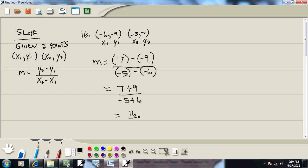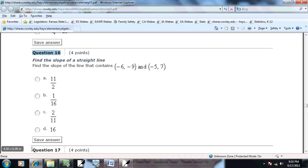7 plus 9 gives us 16. Negative 5 plus 6 gives us 1. Which gives us 16 over 1, gives us 16. That's interesting. Problem number 16 has the answer of 16. Which would be D as in David.